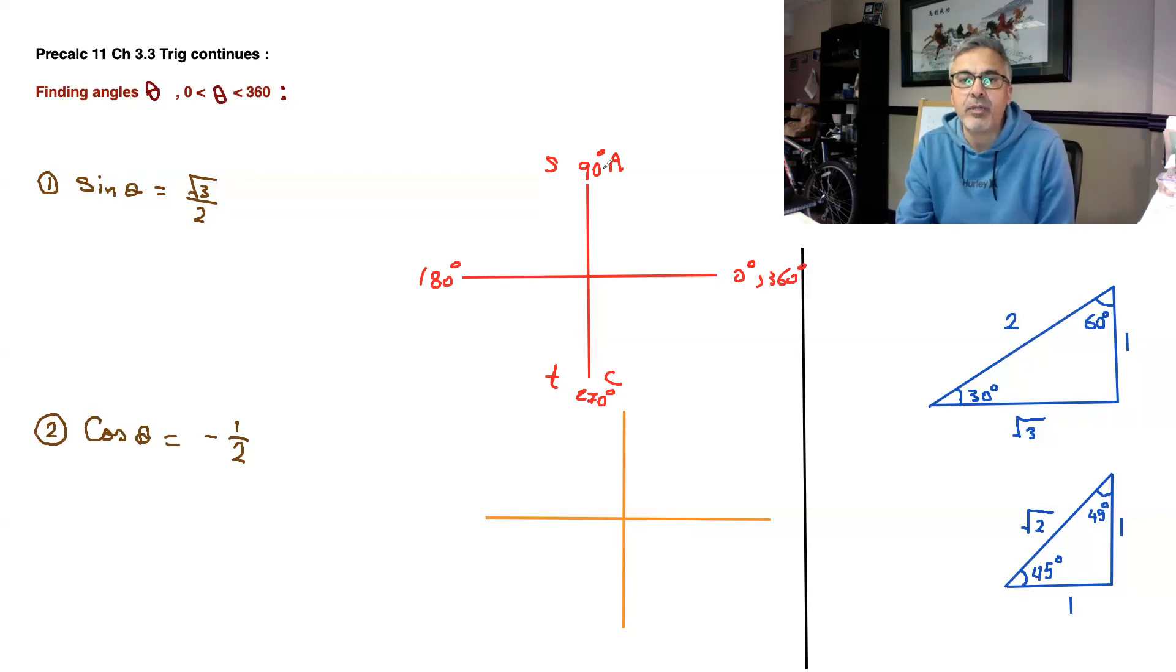Answering these kind of questions, we never use the 90 to the 270. We don't need them. We need the 0, 180, and 360. So here, when it says sine equals root 3 over 2, and they want you to find the angles between 0 and 360, now you're going to have two angles.